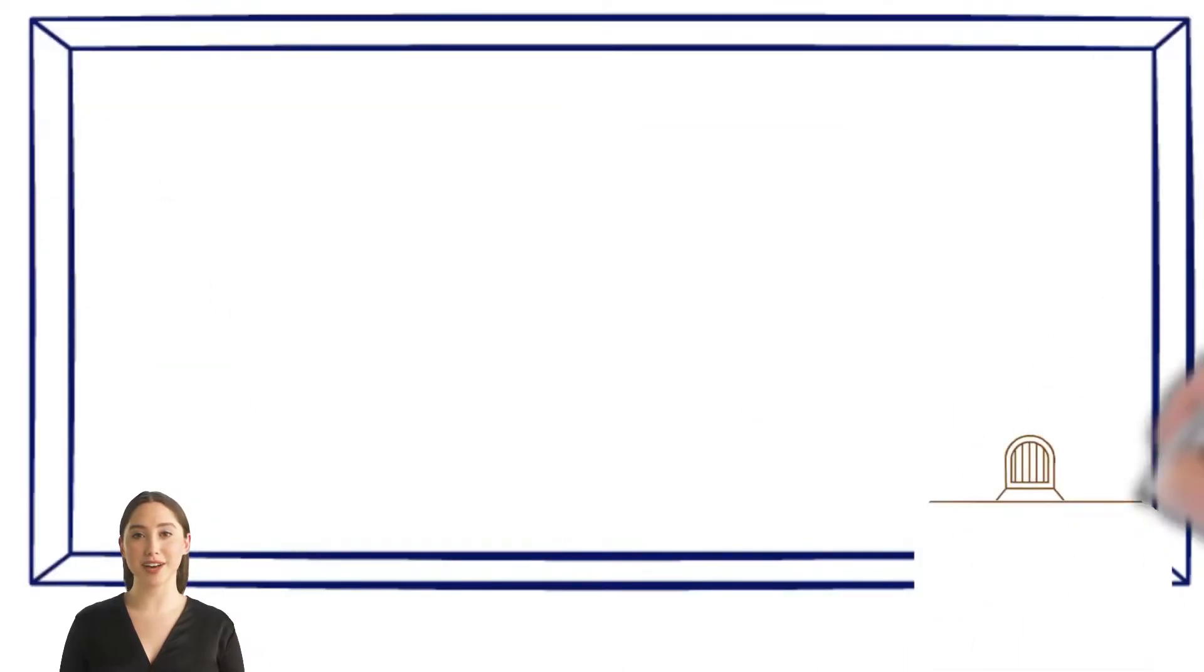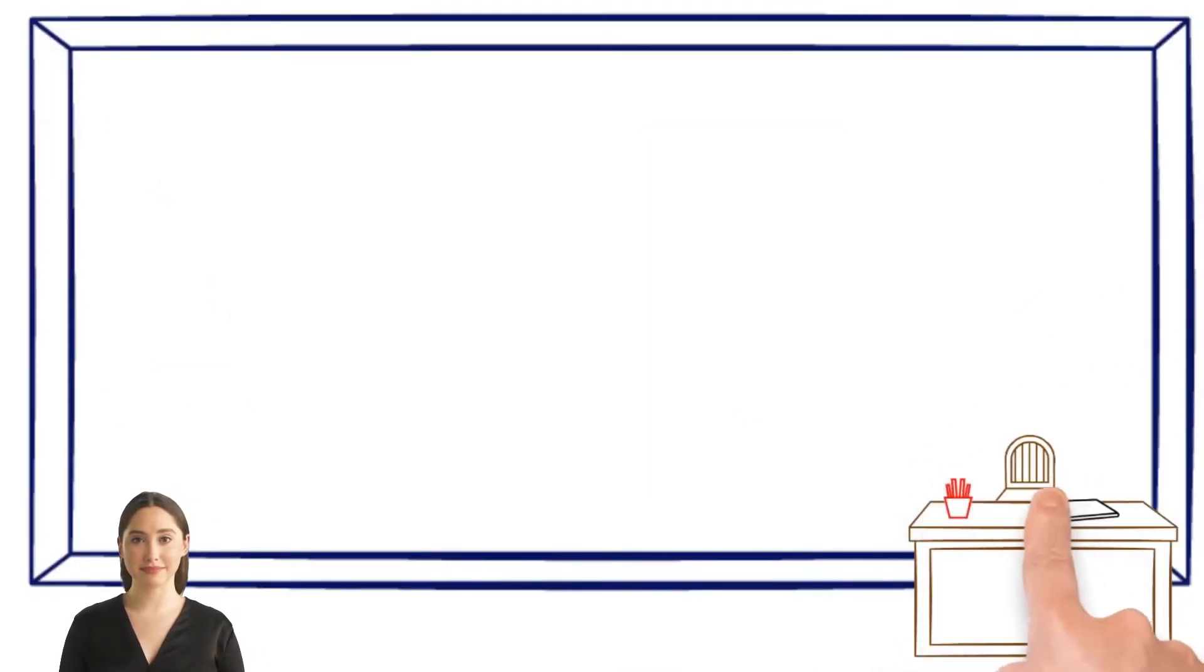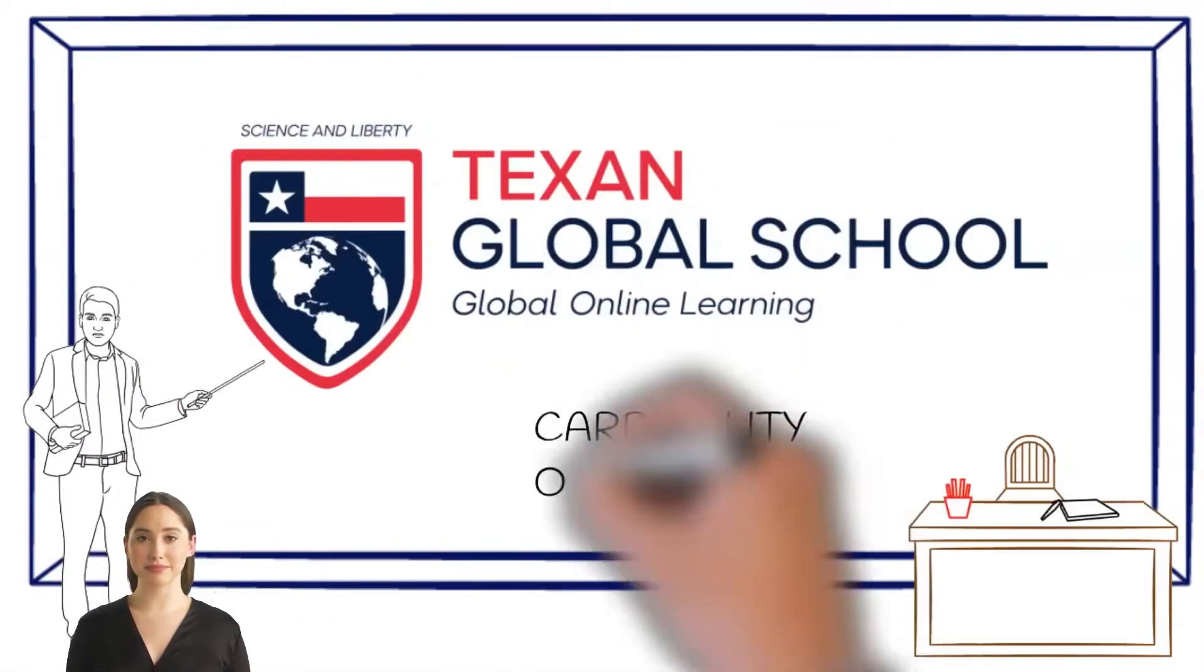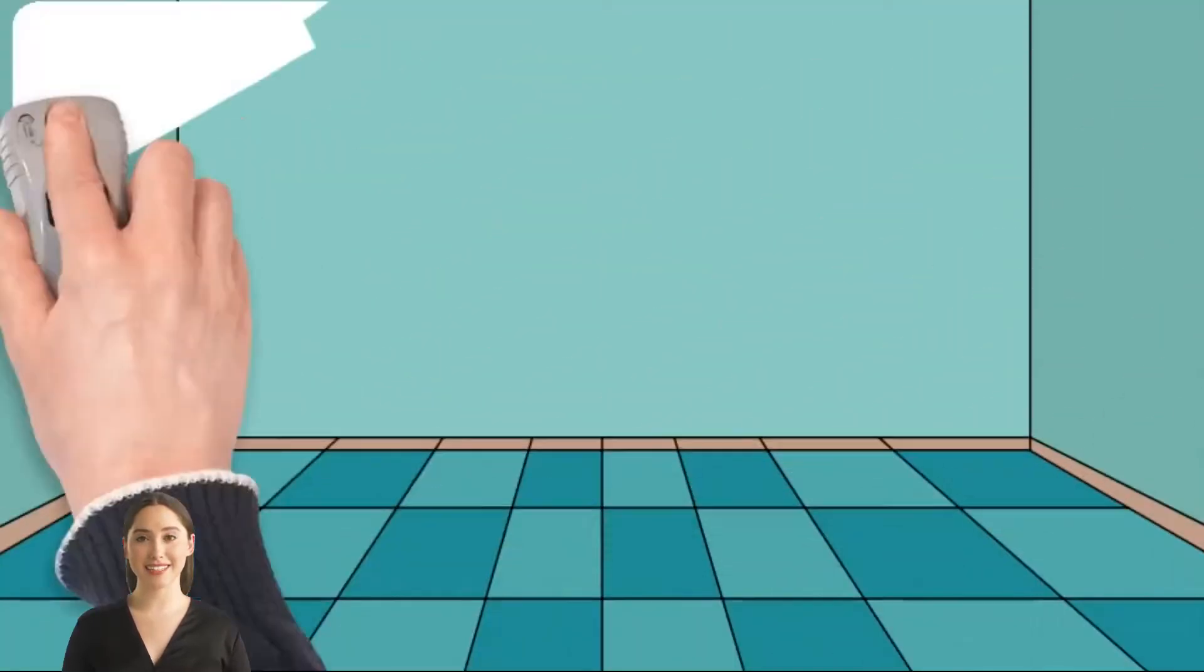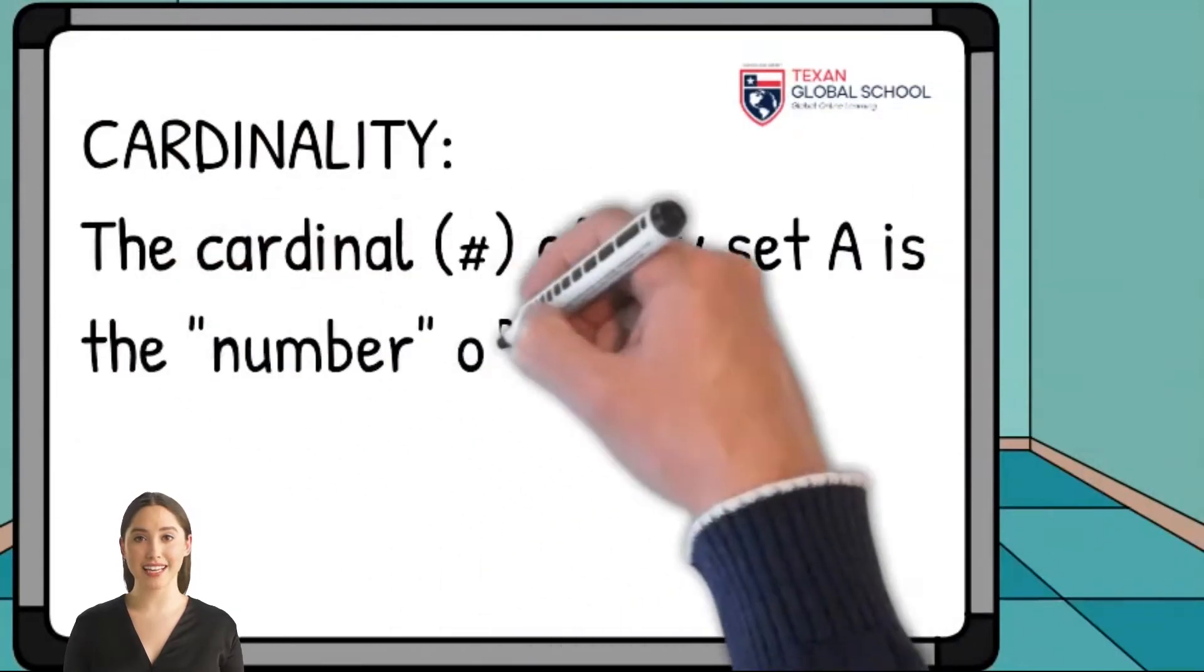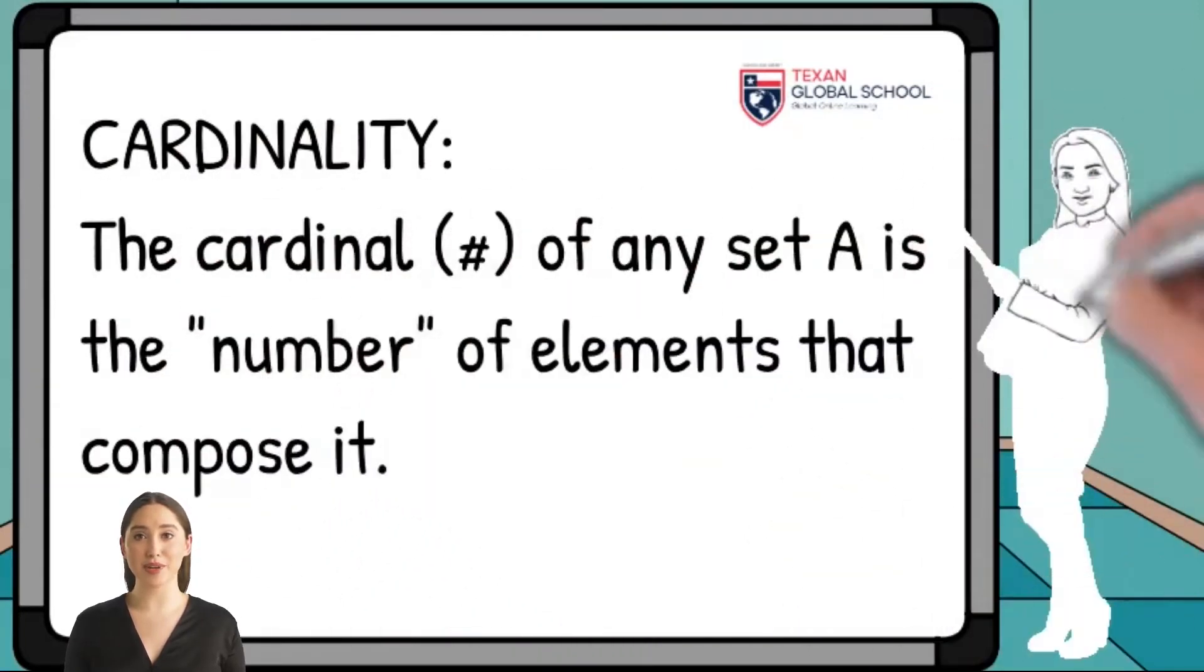Texan Global School: Cardinality of a set. The cardinality of a set is the measure of the elements in it. Therefore, the cardinal of a set A is the number of elements that compose it.